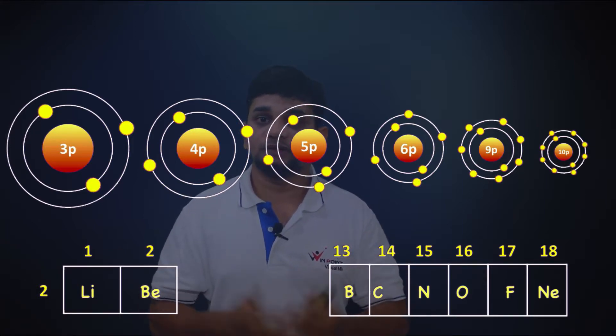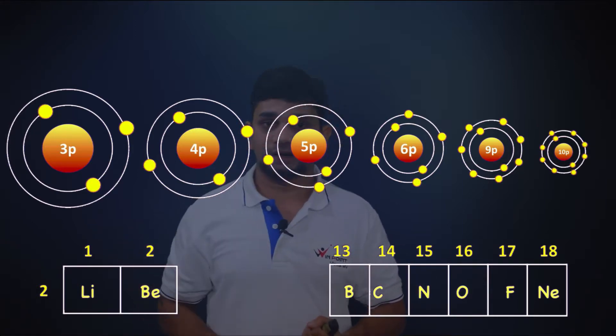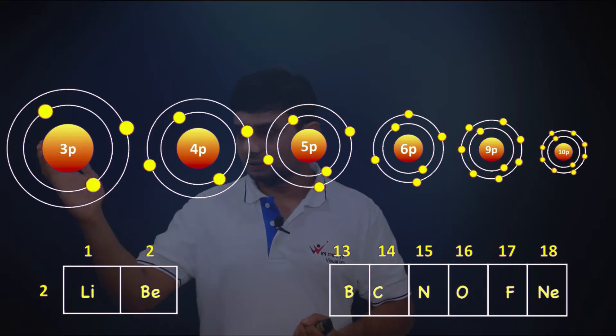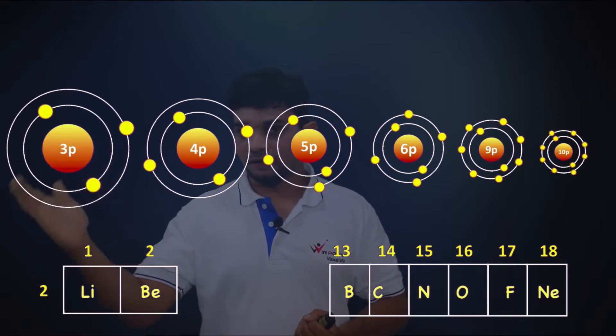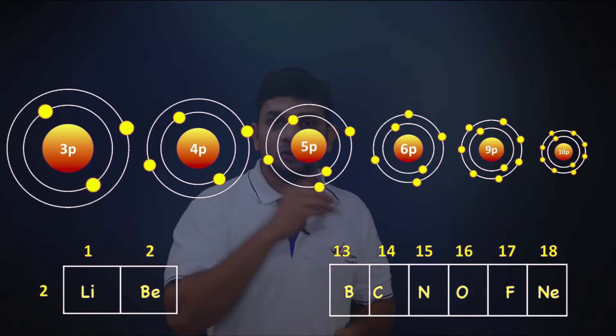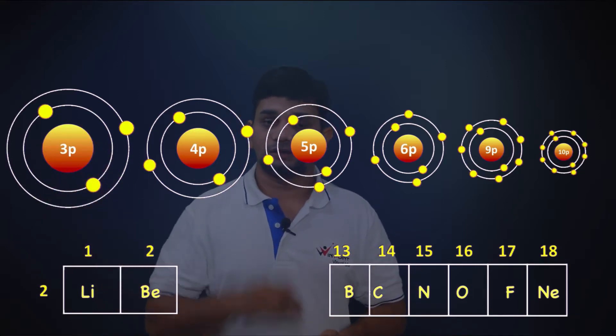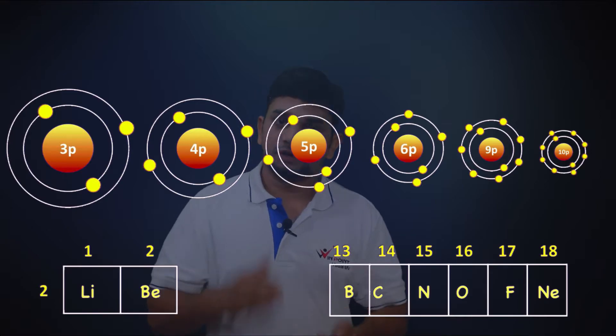Non-metallic character will increase along the period because the atoms have a more powerful nucleus. A powerful nucleus will accept electrons — that is non-metallic character. So from left to right, non-metallic character is increasing and metallic character is decreasing.